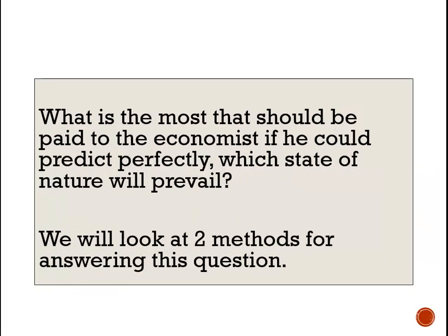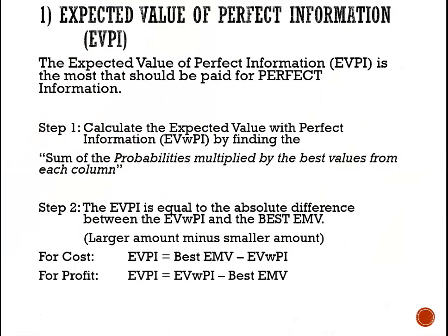The question before us: what is the most that should be paid to the economist if he could predict perfectly which state of nature will prevail? This question is asking us to calculate the expected value of perfect information. The expected value of perfect information is the most that we would pay anyone for perfect information. It should be noted that perfect information does not exist — all we can get are very good forecasts, but forecasts are never perfect.